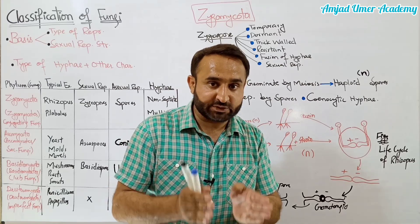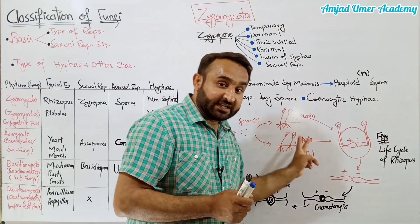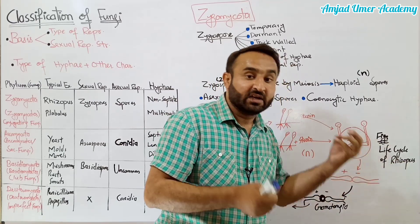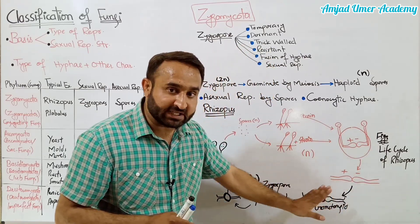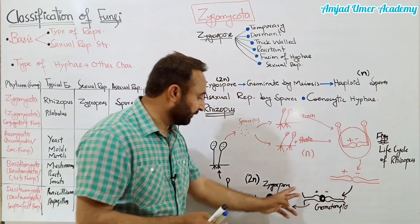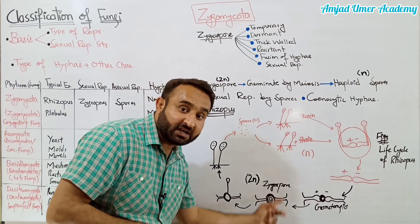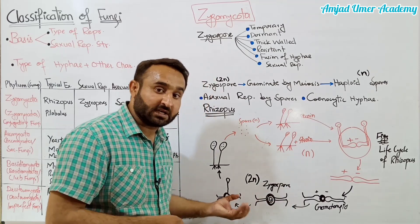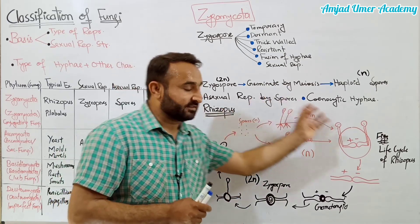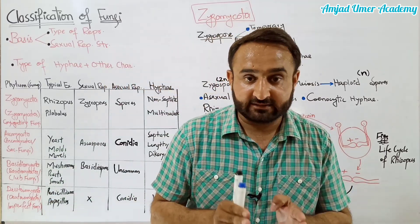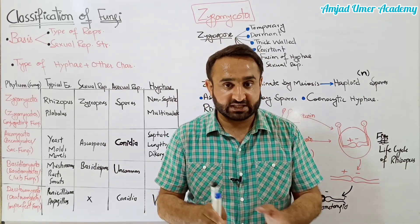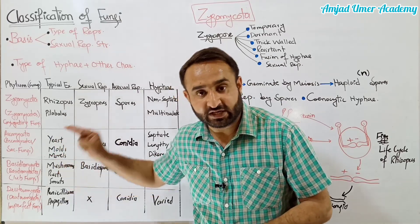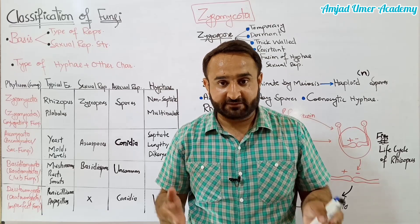Jo fungi decomposer hoti hain, jo saprophytic hoti hain, jo dead organic matter par palti hain, in mein rhizoids hote hain; aur jo parasitic hoti hain un mein haustoria hote hain. Ye rhizoids doosri taraf grow karenge, ek doosre ke saath contact mein aayenge aur genetic exchange karenge - is process ko conjugation kehte hain. Gametangia banenge, sperm aur ovum paida honge, fusion hogi, zygote banega. Zygote ki gird thick wall ban jaye gi, ye dormant ho jayega aur unfavorable conditions ko resist karega. Jab favorable conditions aayengi, ye germinate karega; during germination meiosis hogi aur meiosis ke natije mein haploid spores banen ge. This is the life cycle of Rhizopus, and Rhizopus life cycle is the life cycle of Zygomycota - the conjugating fungi. Next lecture mein hum Ascomycota, Basidiomycota, and Deuteromycota cover karenge, jinhe sac fungi, club fungi, aur imperfect fungi kehte hain.